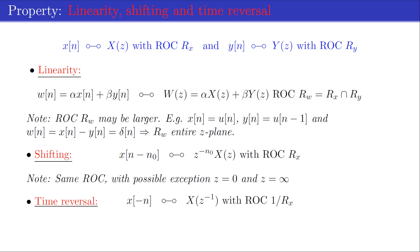The z-transform of the time-reversed sequence x[-n] is given by X(z^{-1}). If the region of convergence R_x is given by the annulus between r₋ and r₊, the region of convergence of the time-reversed sequence is given by the annulus between 1/r₊ and 1/r₋, which is denoted by 1/R_x.